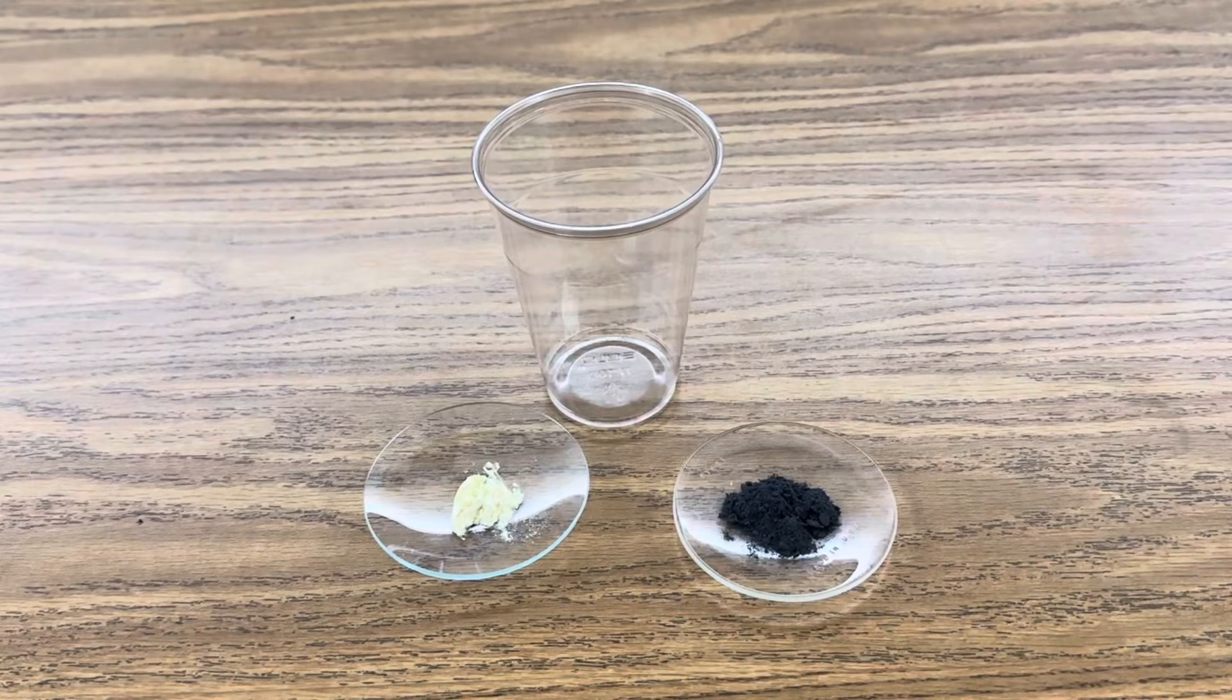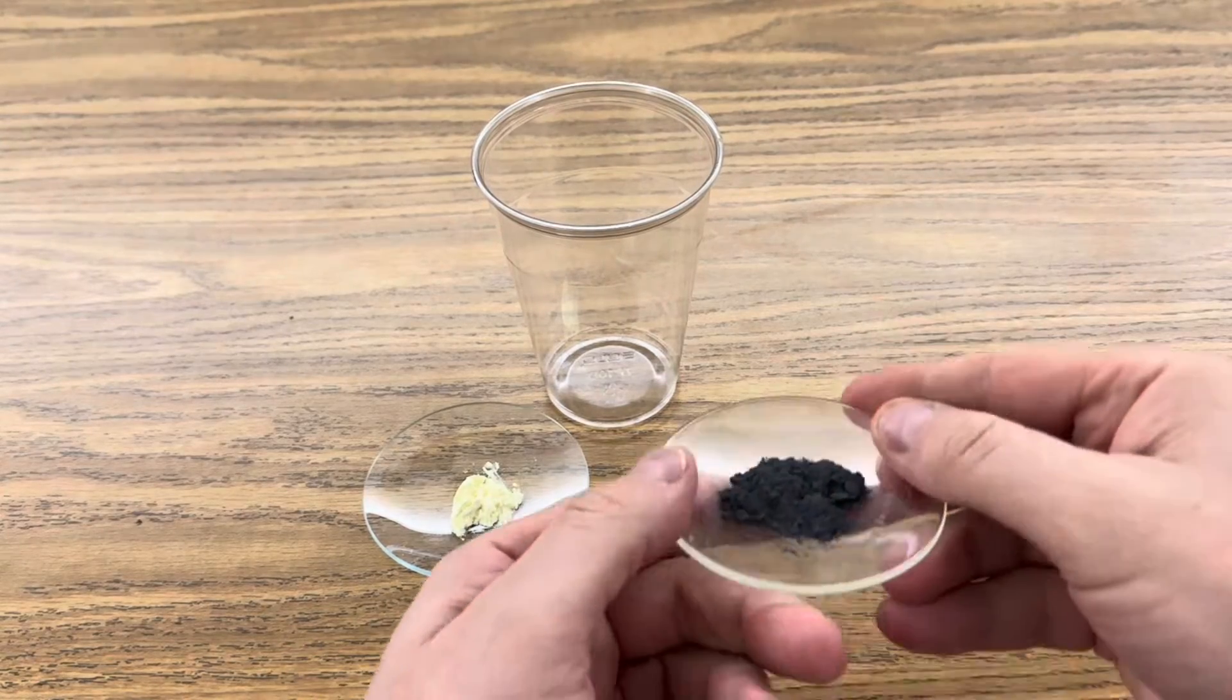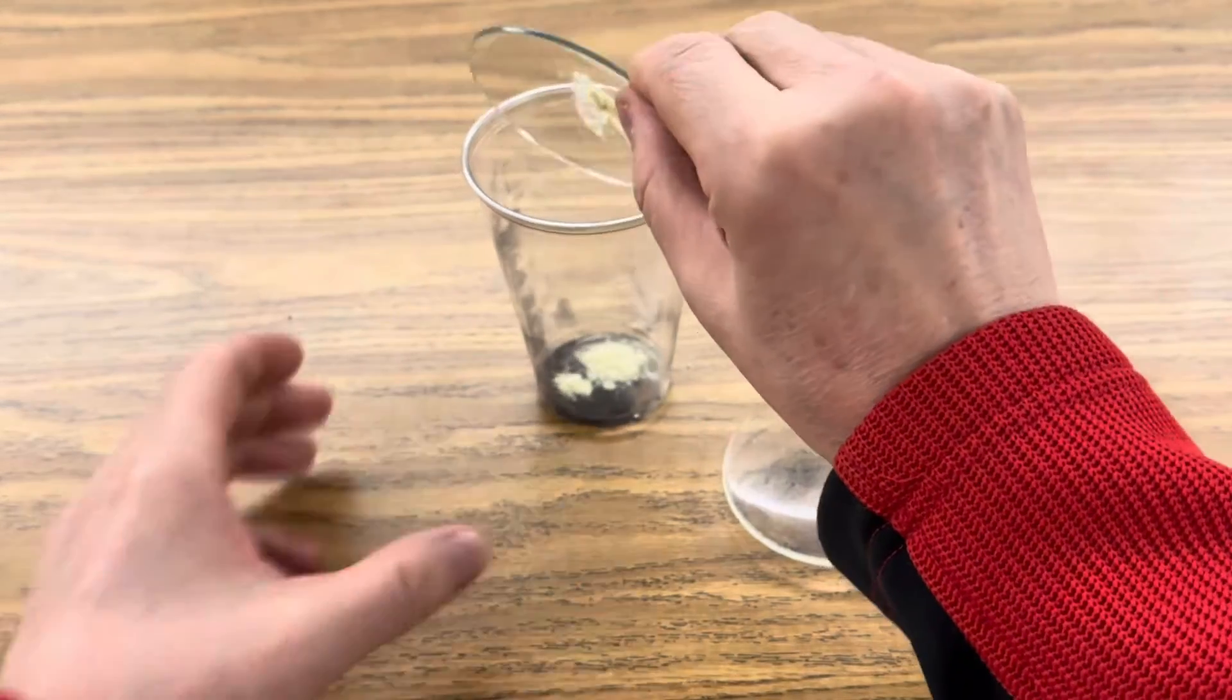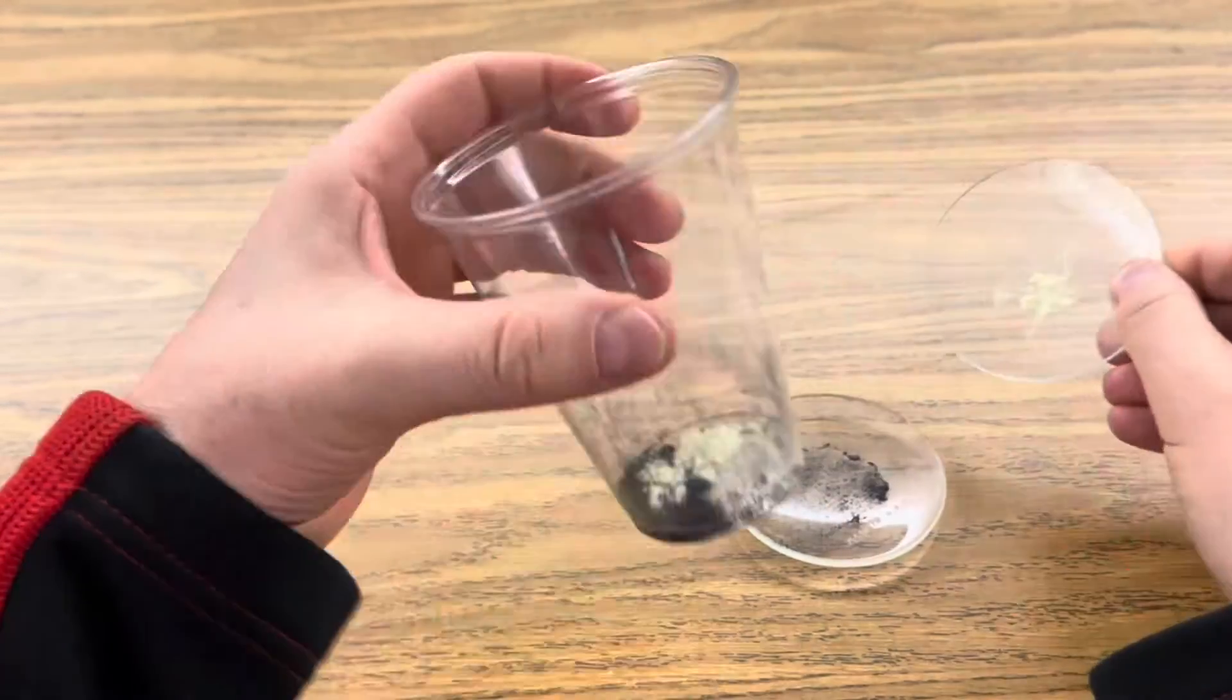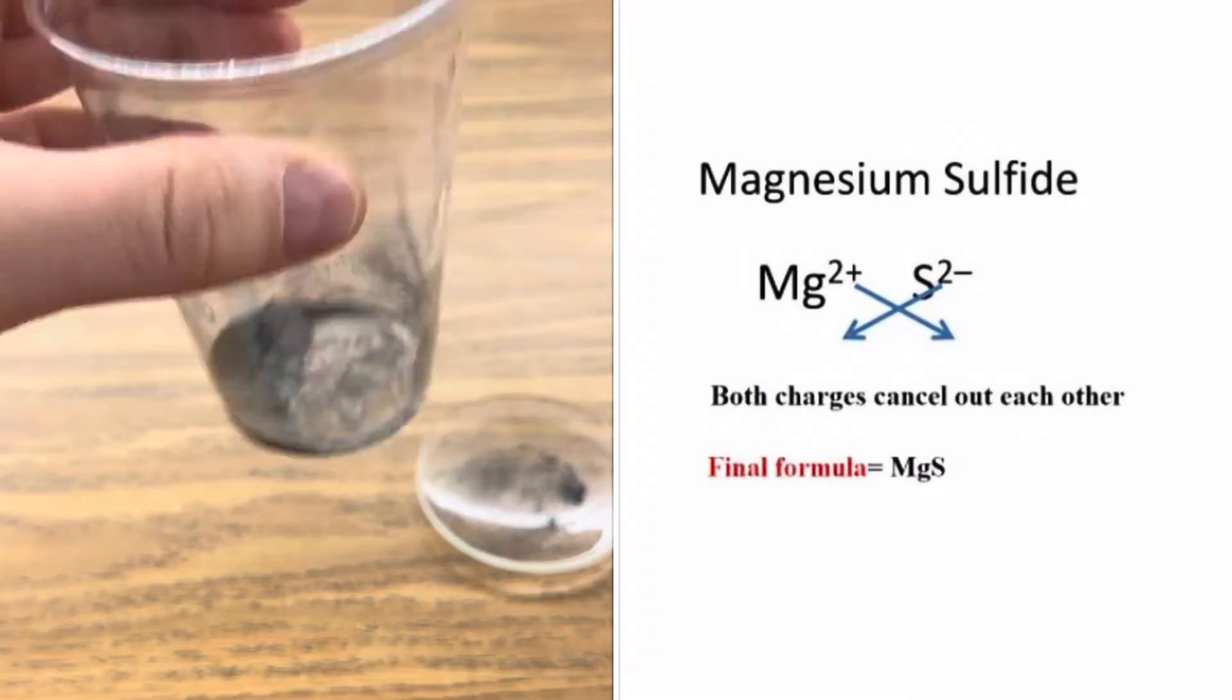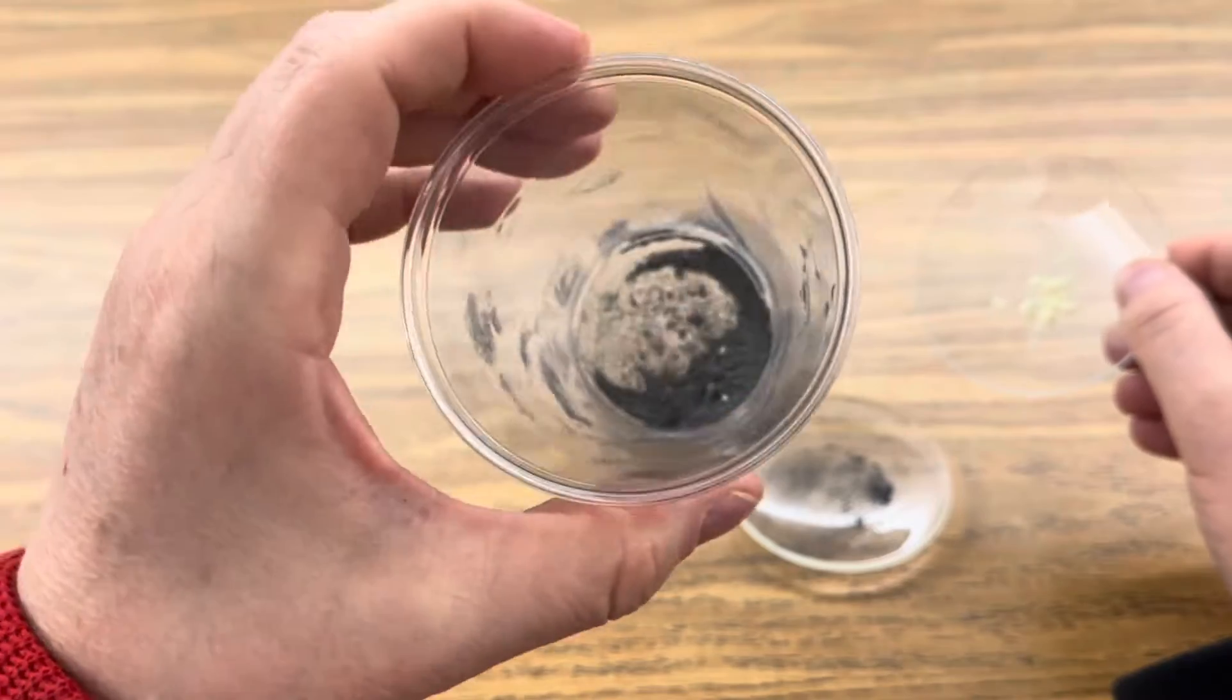The first step is to prepare my magnesium sulfide. I'm going to mix my magnesium powder with my sulfur in a cup, and this will create the electrostatic ionic compound magnesium sulfide. And it looks like that.